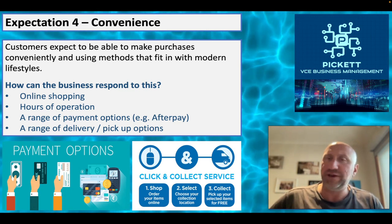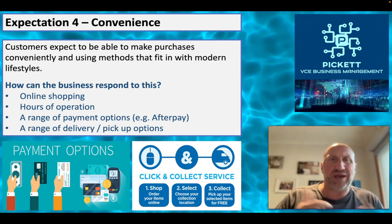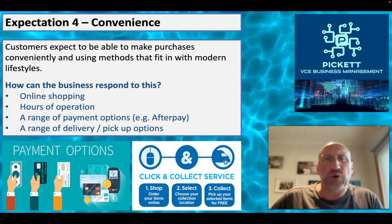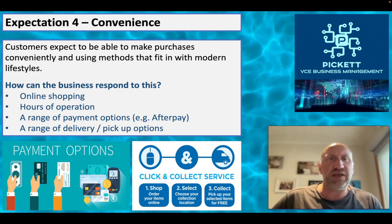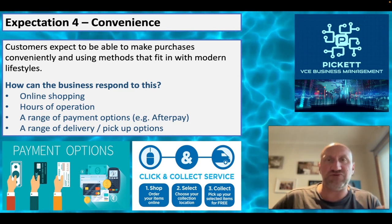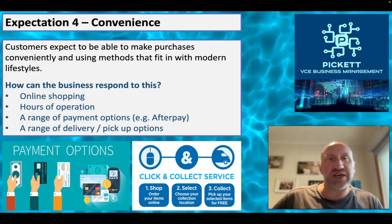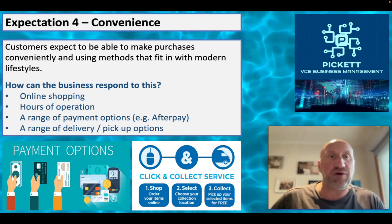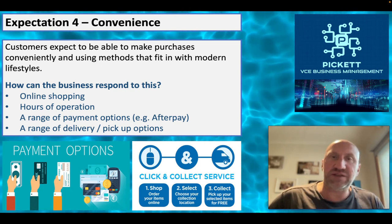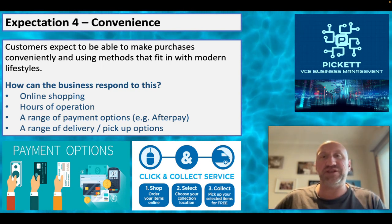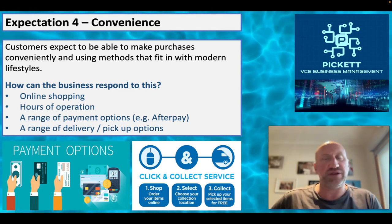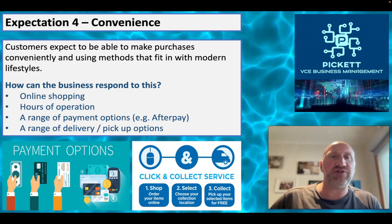The fourth expectation is convenience - an increasingly important one given the way people live their lives today. It's all about instant gratification to a point, but the internet and technology mean convenience is now a huge part of business. Businesses really need to think about how they're meeting the expectation of convenience. Customers expect to be able to make purchases conveniently using methods that fit their modern lifestyles, which are very different to what they were a generation or two ago.